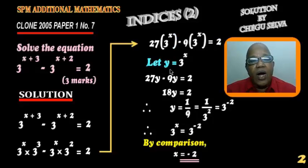Now we let y equals to 3 to the power of x here, so instead of 3 to the power of x we put y. So we get 27y minus 9y equals to 2.